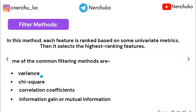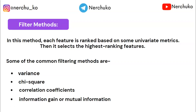We apply each column to a filtering technique. For example, suppose we have 10 columns — we calculate the variance of each column, then take the top 5 columns with the highest variance to create our new dataset. That is the basic variance filtering technique.